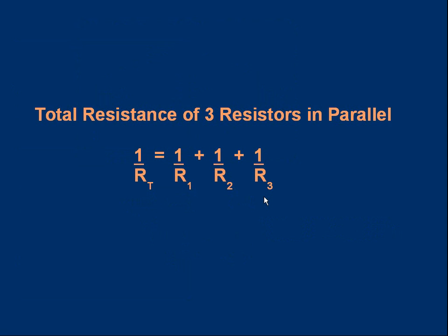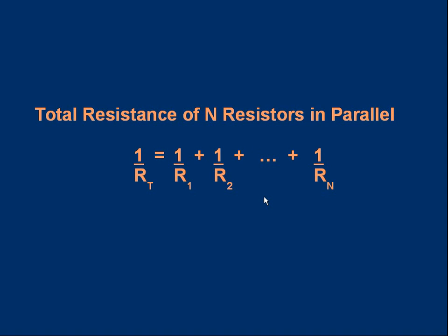This formula is not difficult to memorize. It's true for any number of resistors n — we simply add up the values: one over the total is one over the first, plus one over the second, plus one over the third, up to one over the last. Same formula throughout.